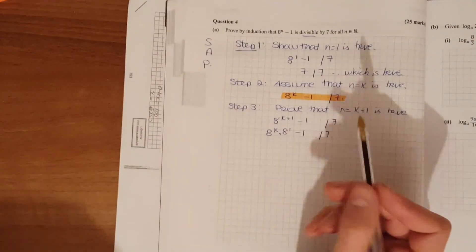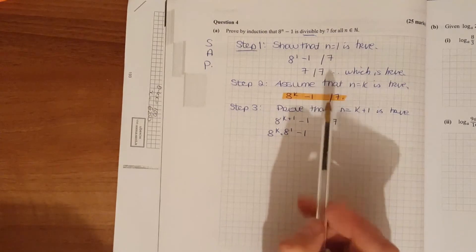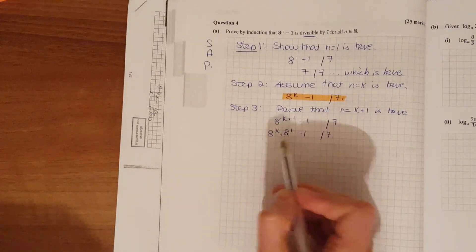Now we want to get this step looking like the assumption. Just keep in mind, if it's going to be divisible by 7, you're going to split up this 8 into 7 and 1.